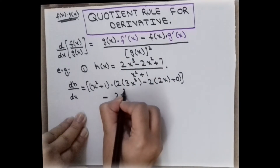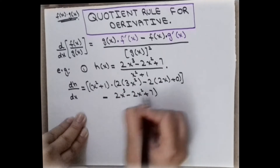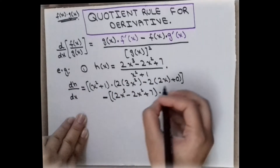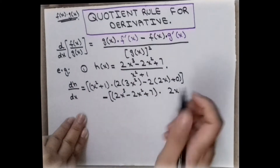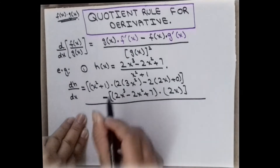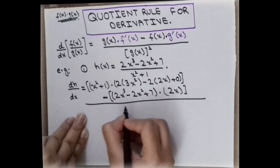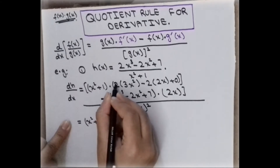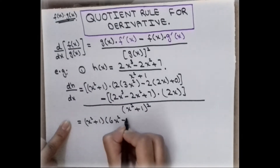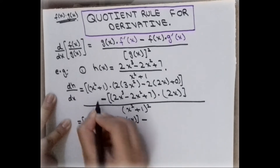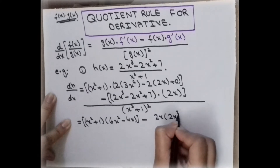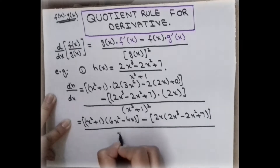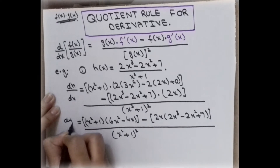The derivative of any constant term is 0. The sign is minus. Then write the upper term as it is — 2x cubed minus 2x squared plus 7 — and take the derivative of the denominator g of x. Applying the power rule gives 2x, and the derivative of any constant is 0. Divide the whole expression by the square of the denominator, which is (x squared plus 1) squared.